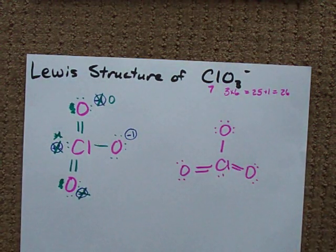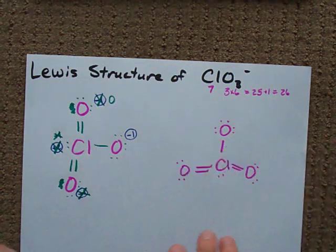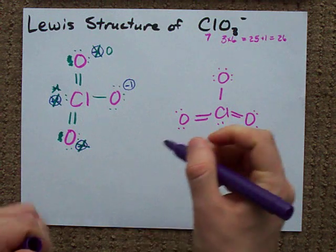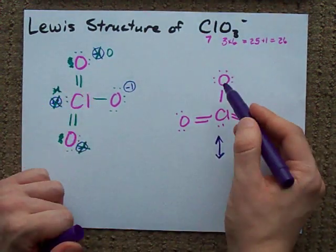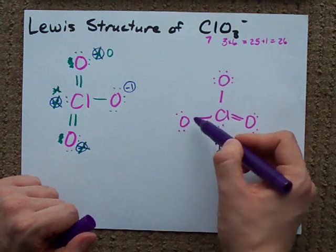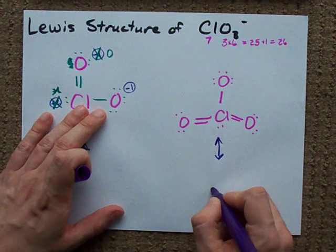Check it out. Now, just to be super thorough, and your teacher may or may not require this of you. Resonance structures? Because we don't know whether the double bond formed with this O or this O or that O and that O. We just don't know.